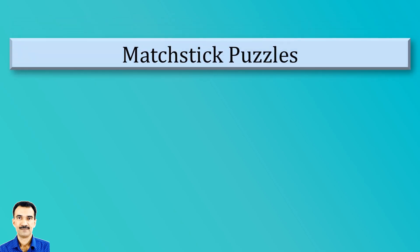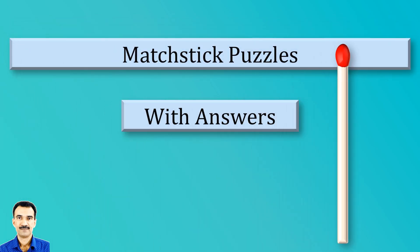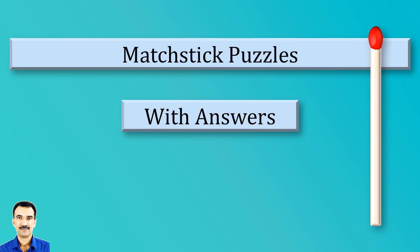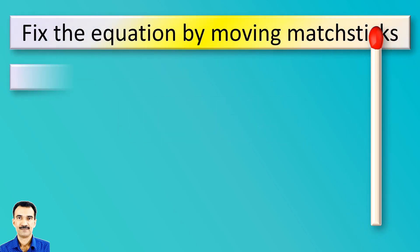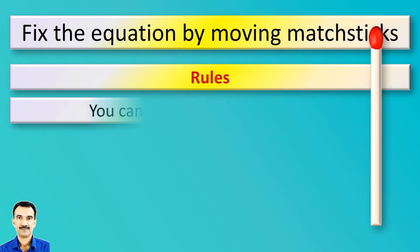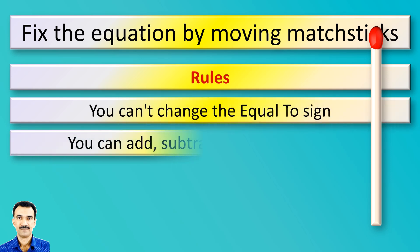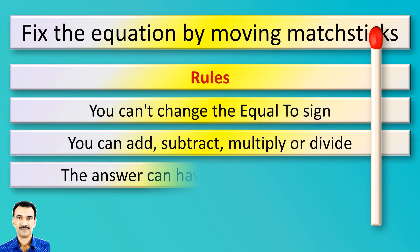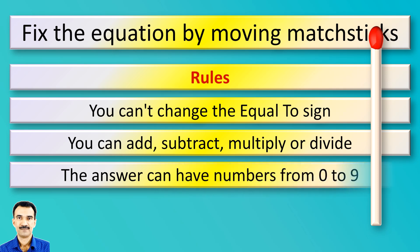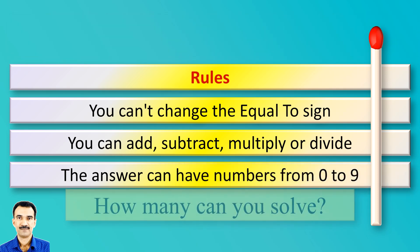Welcome to another video of Matchstick Puzzles with Answers. Please keep the rules in mind: you cannot change the equal to sign. You can add, subtract, multiply or divide. The answers can have numbers from 0 to 9. How many puzzles can you solve?